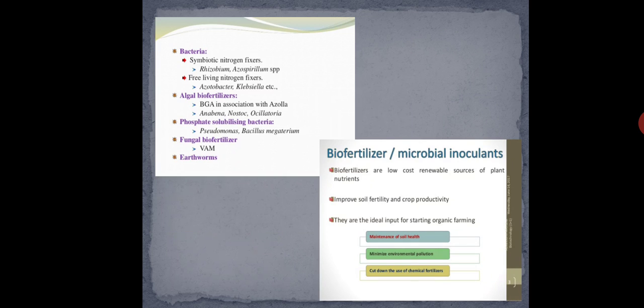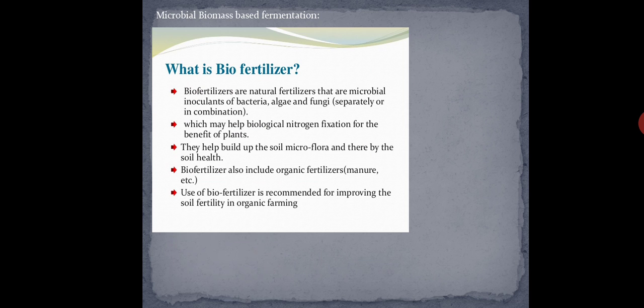What does biofertilizer actually do? The biofertilizer helps in nitrogen fixation. There are two types of relationships: a symbiotic relationship and a non-symbiotic relationship. In the symbiotic relationship, take the example of a plant and bacteria — the roots of the plant, which are in the rhizosphere soil, provide nutrients to the plant.